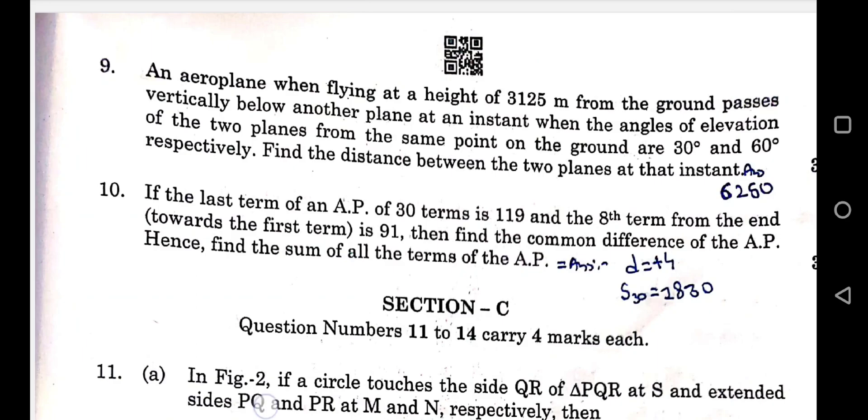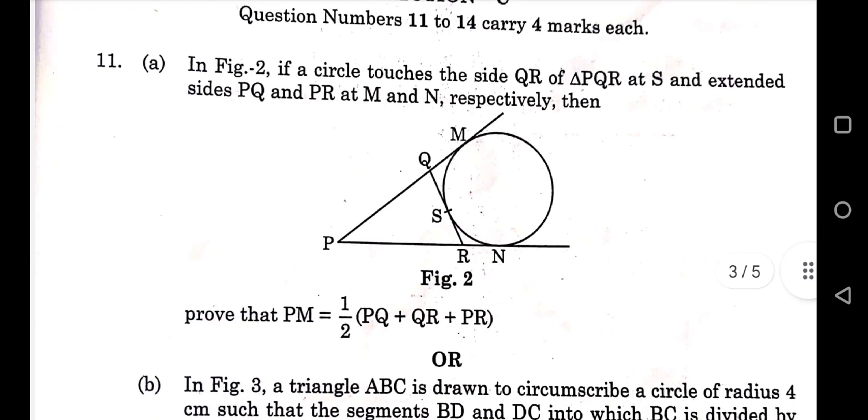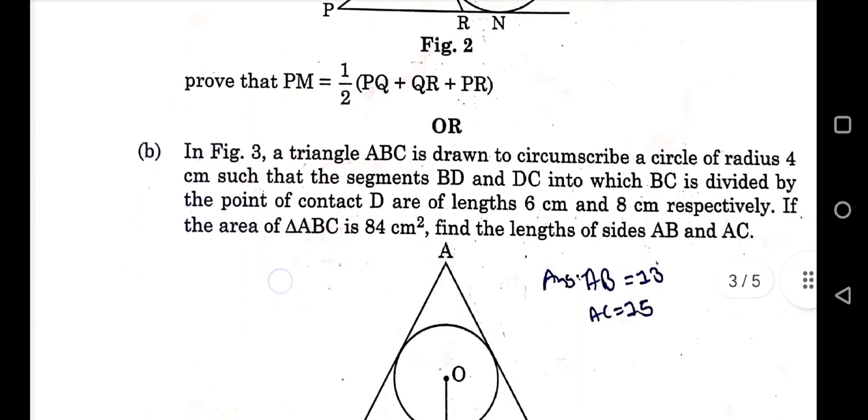Sum of them is 1830. 11a you have to prove so you can do it. 11b answer is AB equals 13 centimeter and AC equals to 15 centimeter.